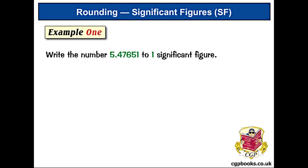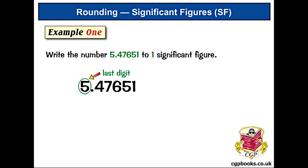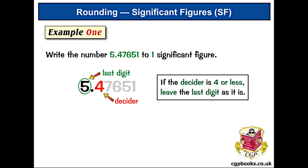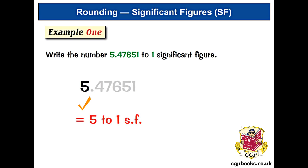Write the number 5.47651 to one significant figure. The first significant figure is five, and we only want one significant figure, so this is also the last digit. The decider is four, and we can ignore everything else to the right. When it's four or less, we leave the last digit as it is, so we leave five alone. So 5.47651 is five to one significant figure, or SF for short.